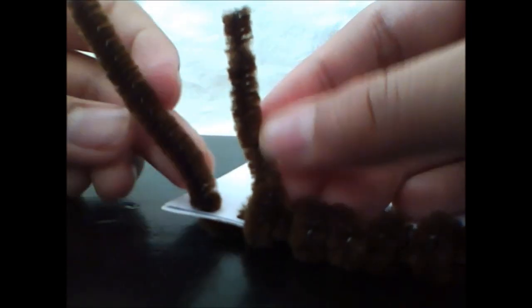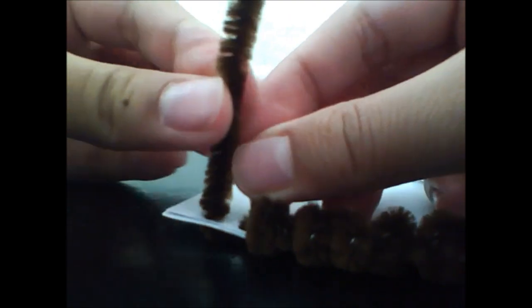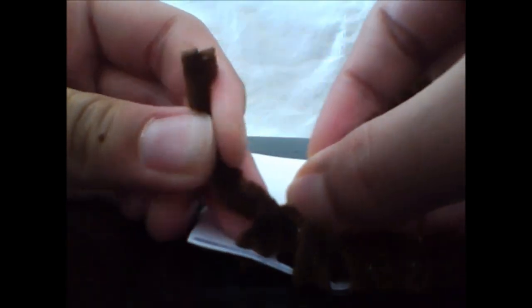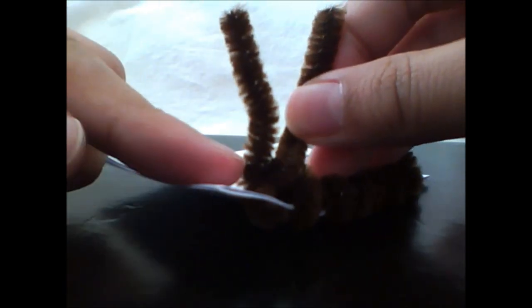As you can see I've pulled it through. What you want to do is take your two ends of pipe cleaners and twist them, and then cut off the excess.